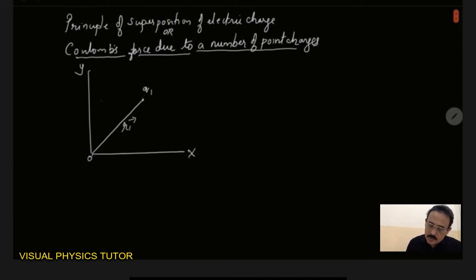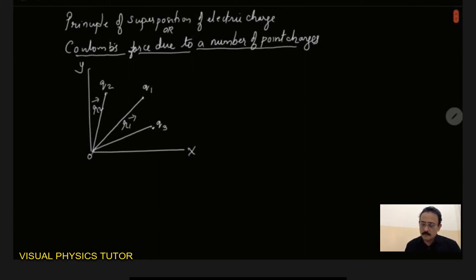Now let me assume another charge q2 here, so let q2 be at a position vector r2 vector. And let us consider another charge q3 at a position vector that is r3. Now it means that we are considering three charges q1, q2, q3 placed in a two dimensional plane.